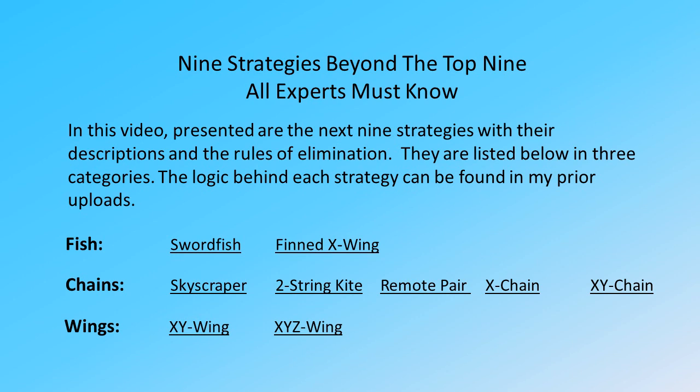The logic behind each strategy can be found in my prior uploads. The strategies are: Fish — Swordfish, Finned X-Wing; Chains — Skyscraper, Two-String Kite, Remote Pair, X-Chain, X-Y Chain; Wings — X-Y Wing, X-Y-Z Wing.